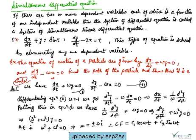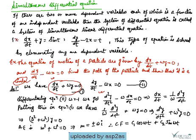For the solution, we have two simultaneous equations: first, dx/dt + ωy = 0, and second, dy/dt - ωx = 0. We will differentiate the second equation with respect to t in order to find the value of dx/dt.